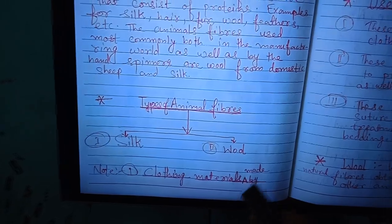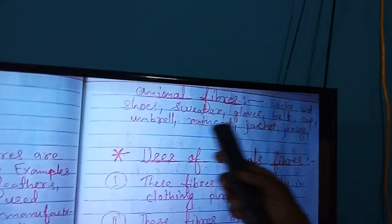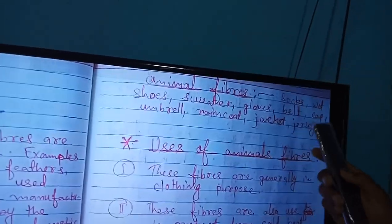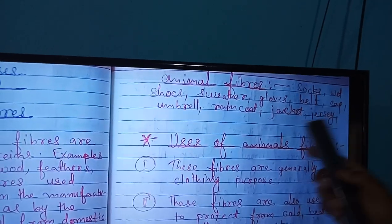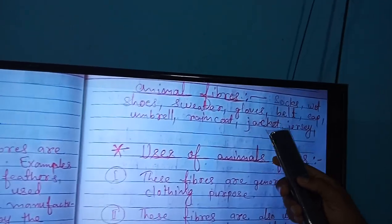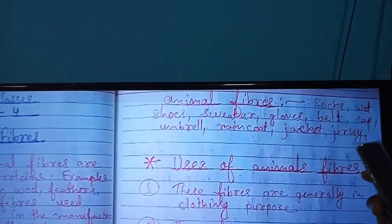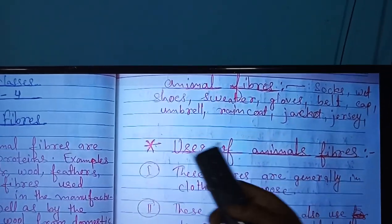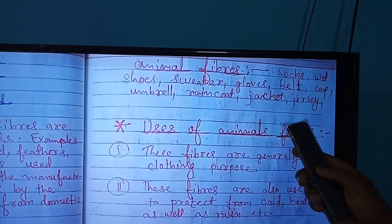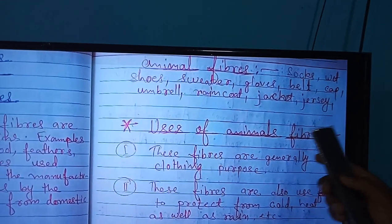Clothing materials made from animal fibers include: socks, weight shoes, sweaters, gloves, belt, cap, umbrella, raincoat, jacket, jersey, etc.